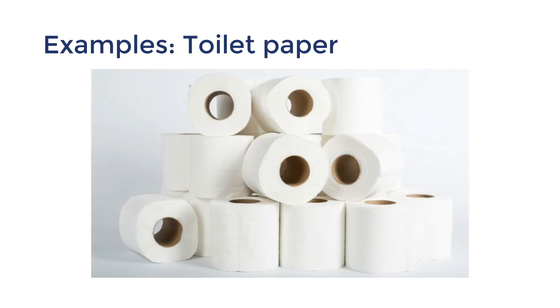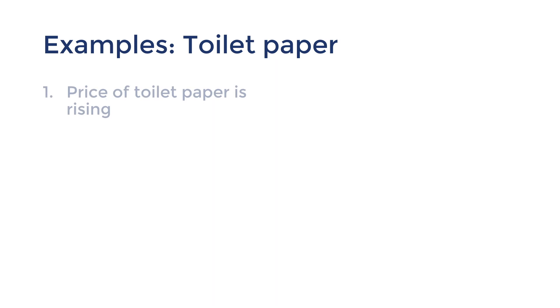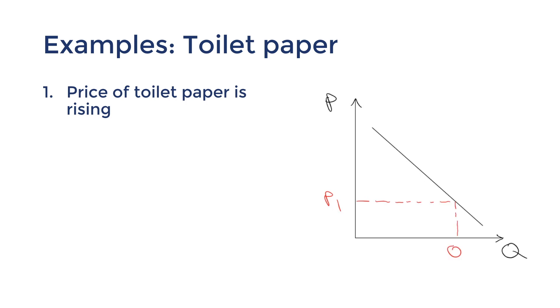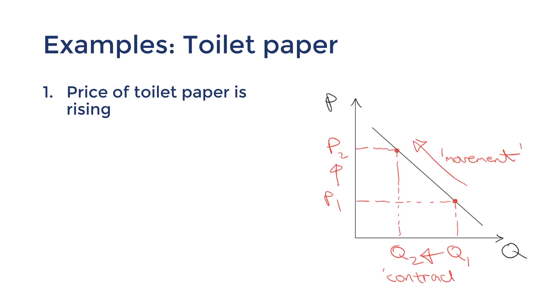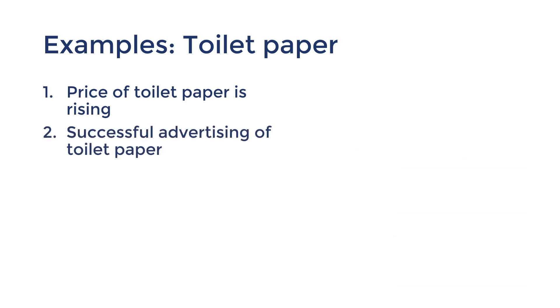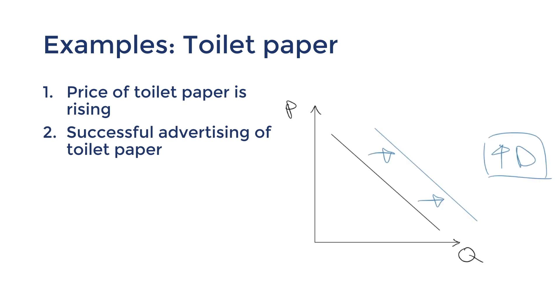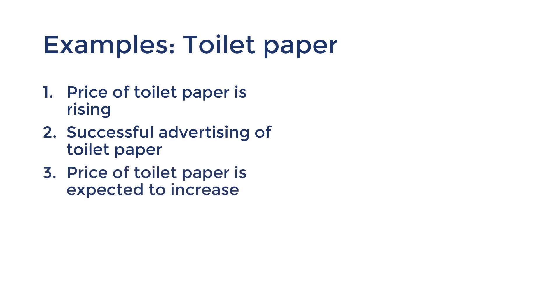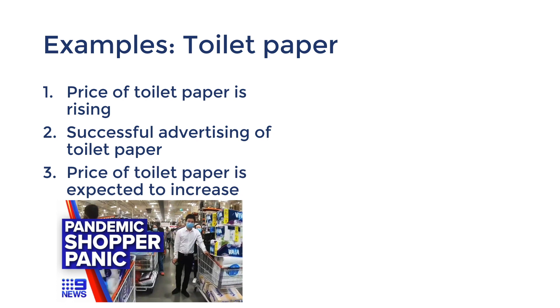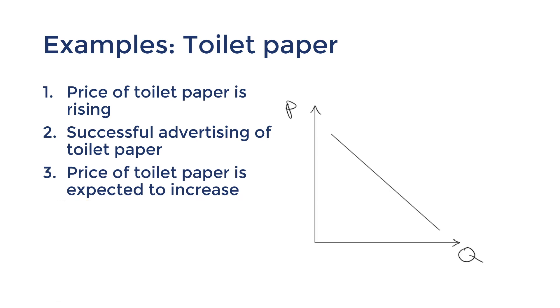So those are the influences on demand. Let's go through a few examples using the demand for toilet paper. Scenario one: the price of toilet paper is rising. A rise in the price of toilet paper itself would cause a contraction in demand. Scenario two: toilet paper ads have been very successful. This would cause customers to increase their demand for toilet paper, shifting the demand curve to the right. Scenario three: the price of toilet paper is expected to rise. This would cause people to stock up in advance, so current demand would increase, shifting to the right.